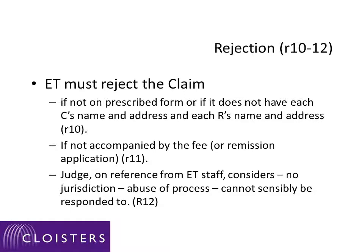The rules about rejection are worth bearing in mind — they're at Rules 10 to 12. The tribunal must reject the claim if it's not on the prescribed form, or if it doesn't have each of the claimant's name and address and each of the respondent's names and addresses. Secondly, if it's not accompanied by the fee or remission application, that's Rule 11. And thirdly, the tribunal staff can refer the claim to a judge who will make a decision and reject the claim or parts of the claim where the judge considers that there's no jurisdiction, that it's an abusive process, or that it cannot sensibly be responded to.